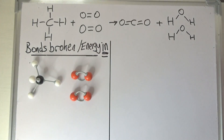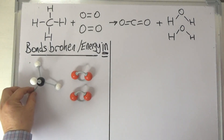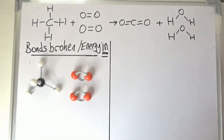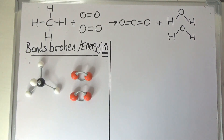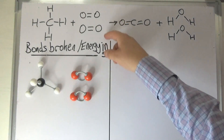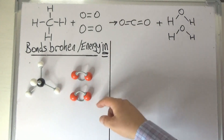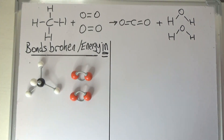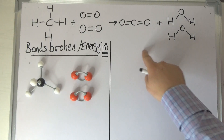You can see here I've used the molly mods to make a molecule of CH4 methane, and I've also used them to make these two molecules of oxygen. You'll remember from the last video that when chemical reactions happen, first of all we need to put energy in to break the bonds of those reactant molecules.